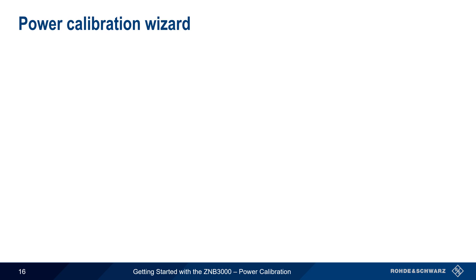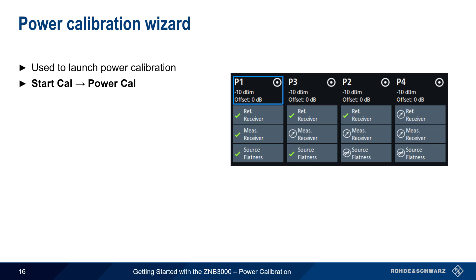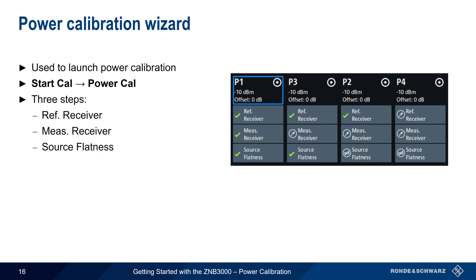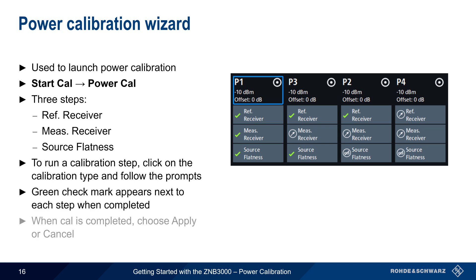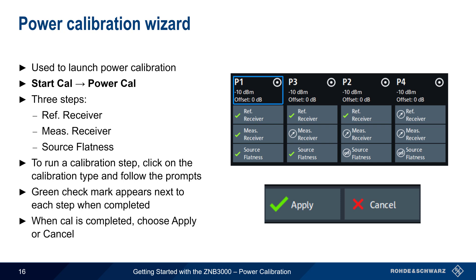Calibration is run and results are observed using the Power Calibration Wizard, launched by going to Start Cal then Power Cal. There are buttons for each of the three steps: Reference Receiver, Measurement Receiver, and Source Flatness. Simply click on the calibration type and follow the prompts. A green check mark will appear next to each step when it's completed, and the Apply button can be used to activate the completed power calibration.